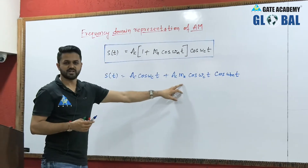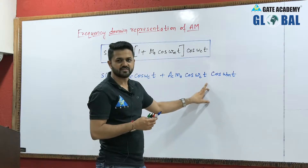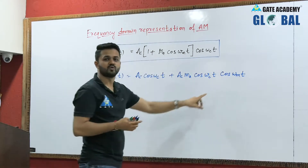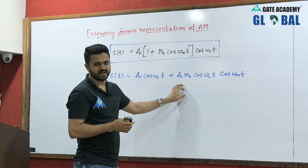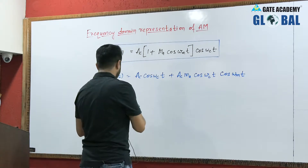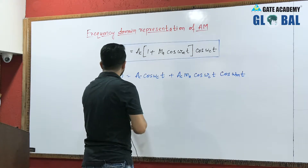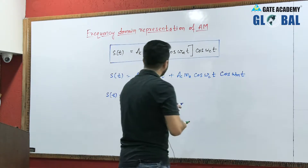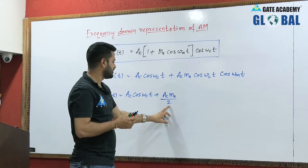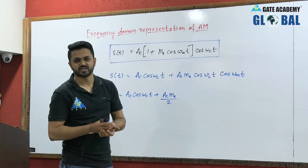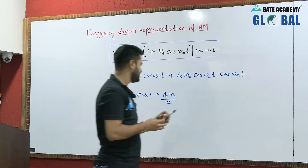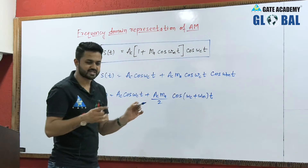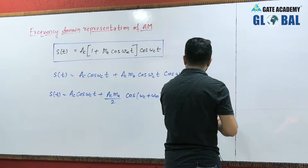We are getting two components, and because this is the multiplication of two cosine waves, we can apply the formula 2 cos A cos B = cos(A+B) + cos(A−B). We multiply and divide by 2, then get S(t) = AC cos ωC t + (ACMA/2)[cos(ωC + ωM)t + cos(ωC − ωM)t].